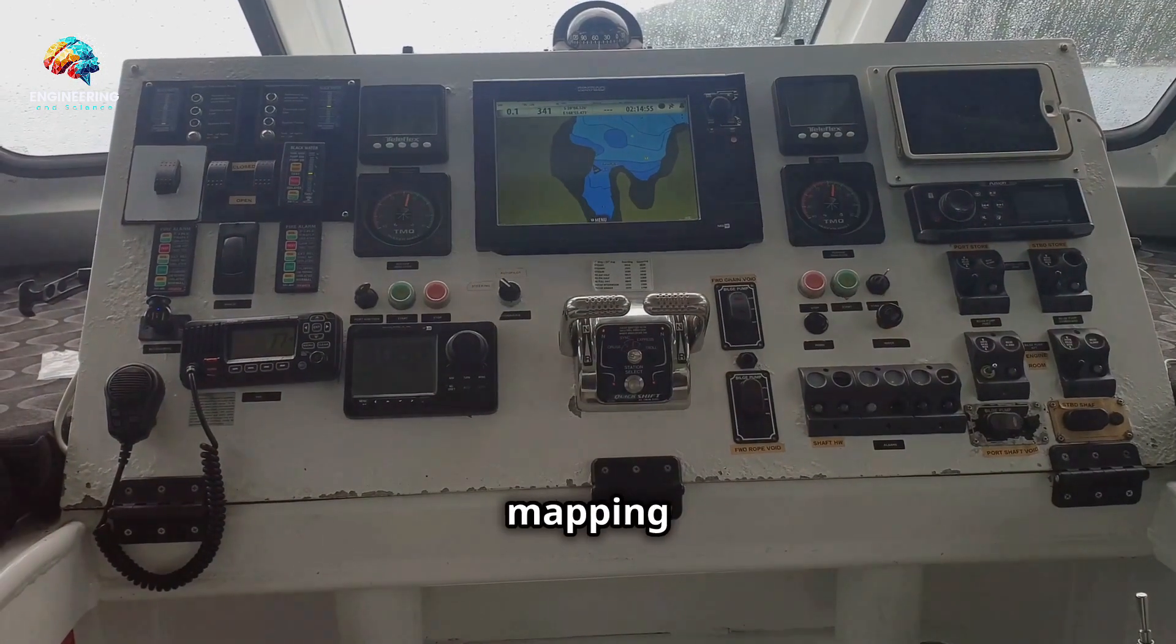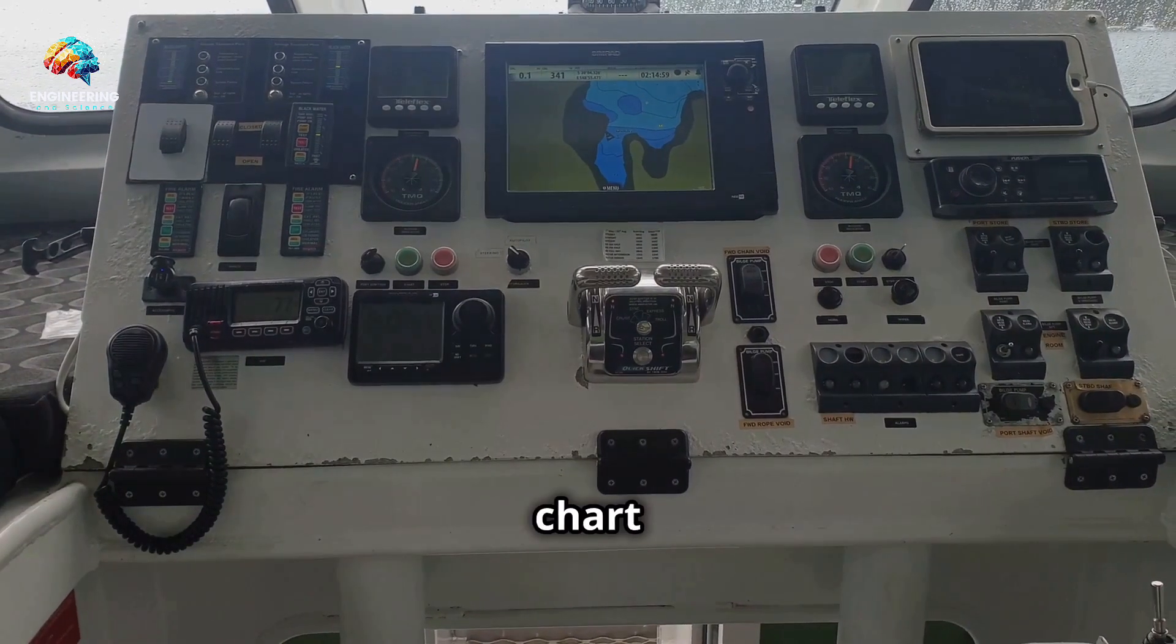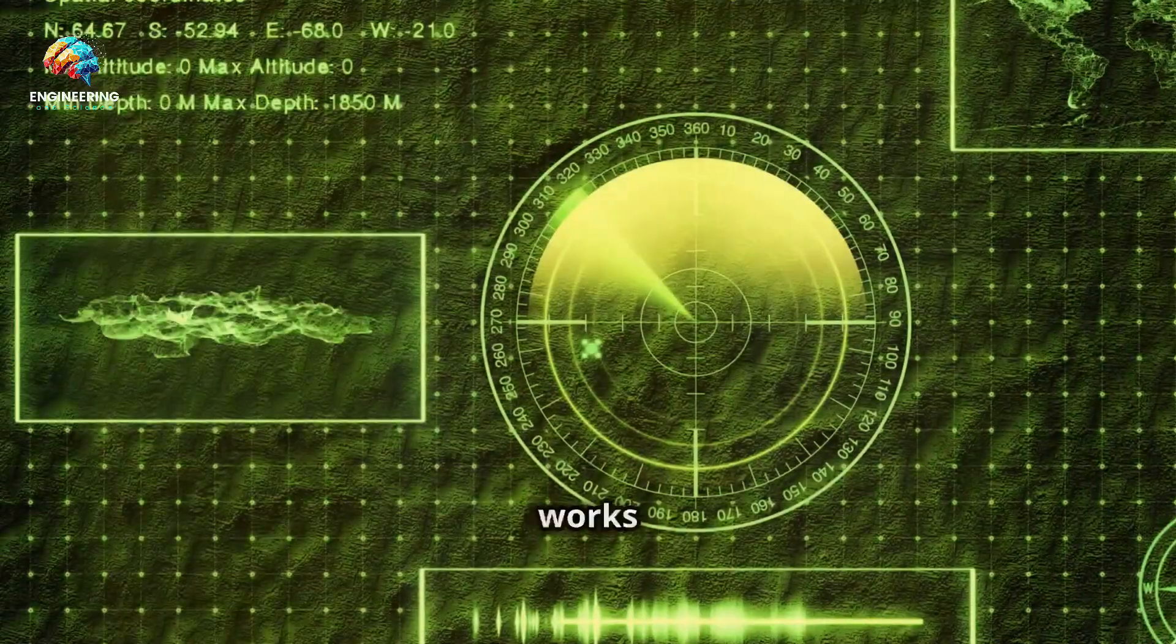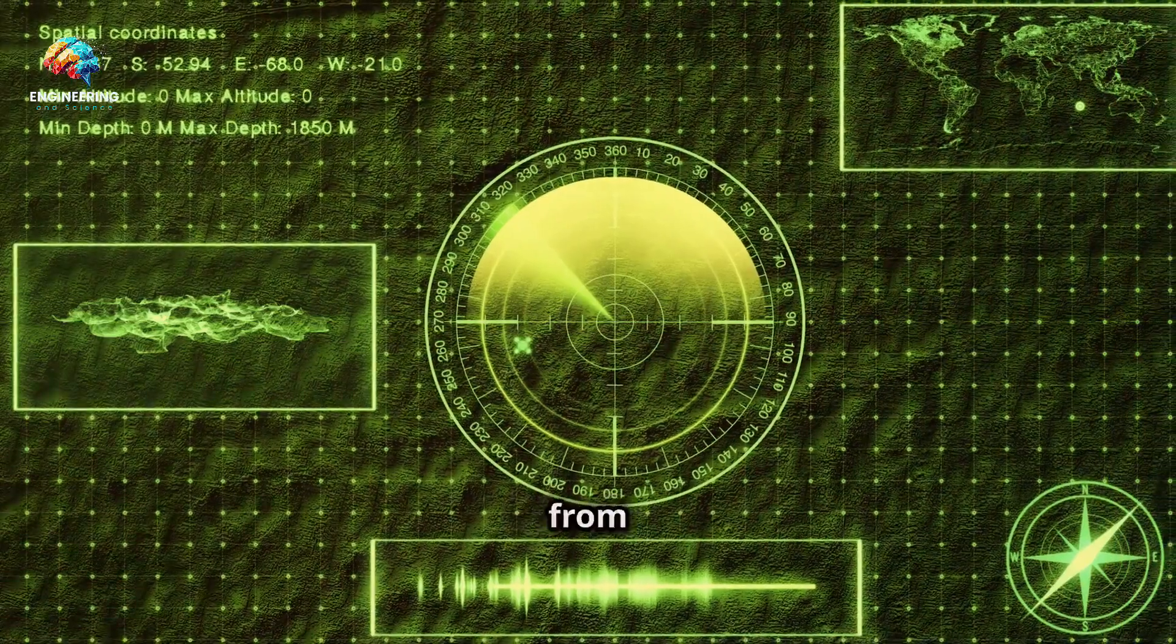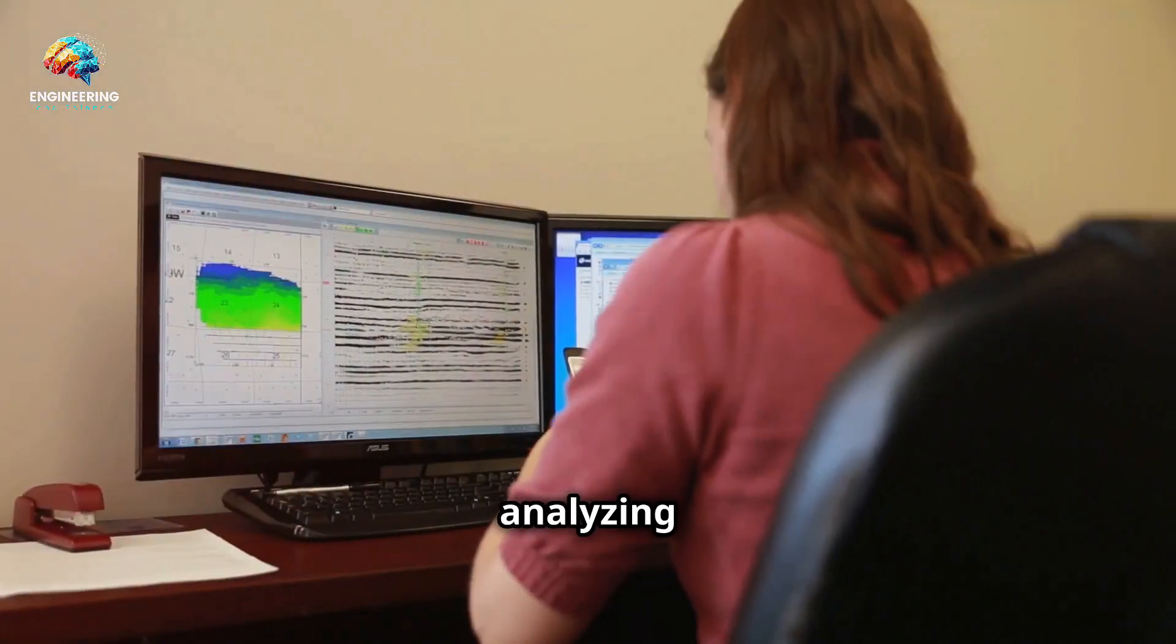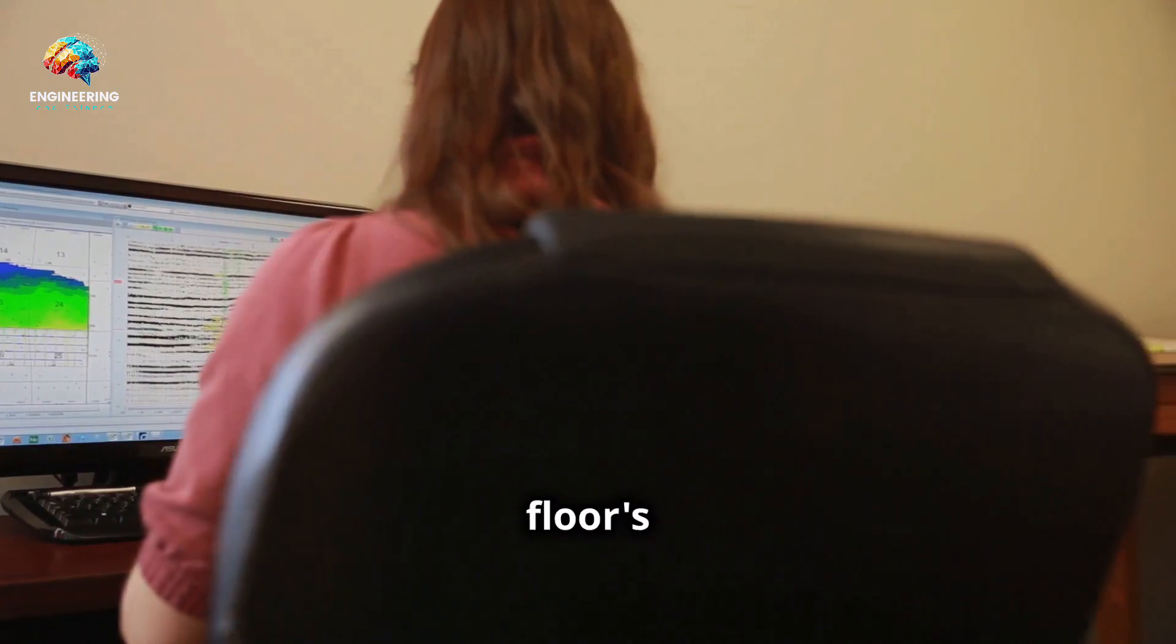The first step in the mapping process is to use sonar to create a general bathymetric chart of the area. Sonar works by emitting sound waves and measuring the time it takes for them to bounce back from the seabed. By analysing these echoes, scientists can build up a detailed picture of the ocean floor's topography.